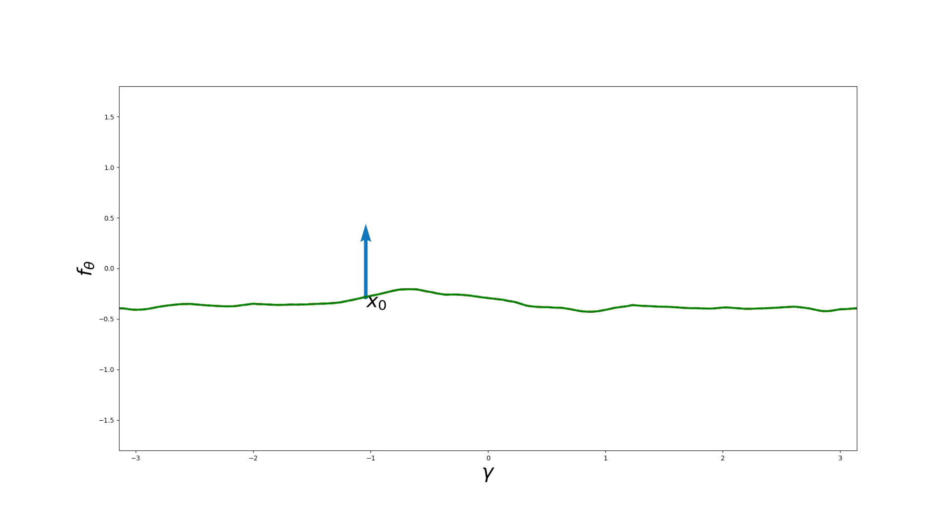Let's now take one single initialization and observe the effect of one step of gradient descent on a single data point x0. We see that the network function not only moves at x0, but at nearby points too.